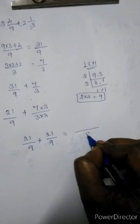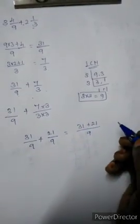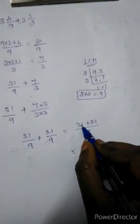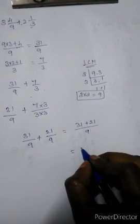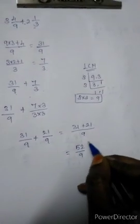Here 7 times 3 is 21 divided by 9. We are having same denominator. Now we can easily add 31 plus 21. 52 by 9. We are getting this.